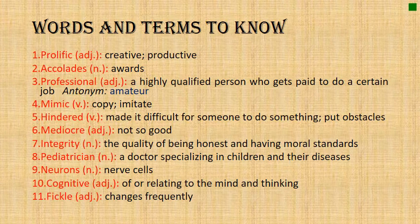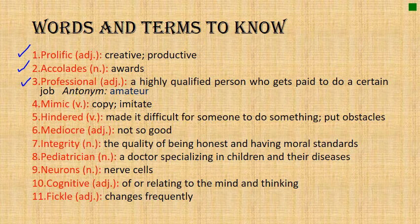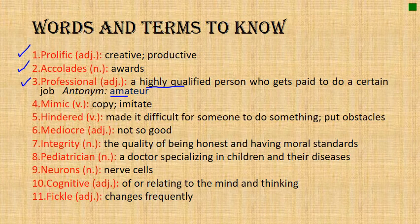Now let's move on to our vocabulary words. Number one: prolific — when you are creative and productive. Accolades are awards; for example, Juventus has earned several accolades — trophies, championships — over the past two years. Professional means a highly qualified person who gets paid to do a certain job: a professional football player, a professional singer, a professional dancer. The antonym is the amateur — just a beginner.